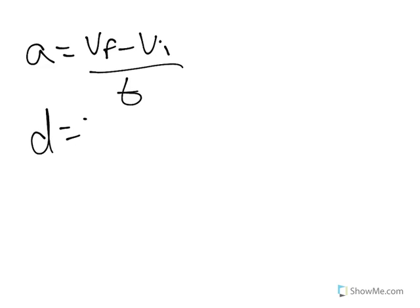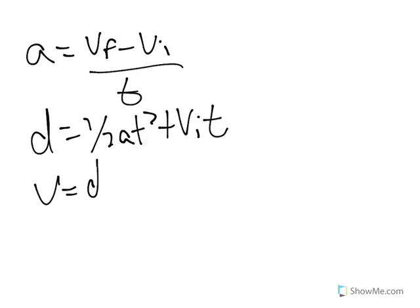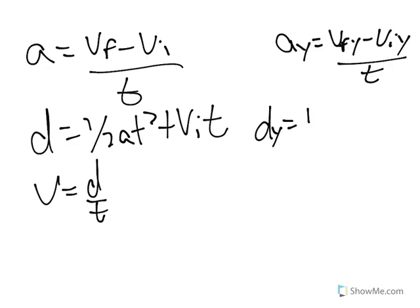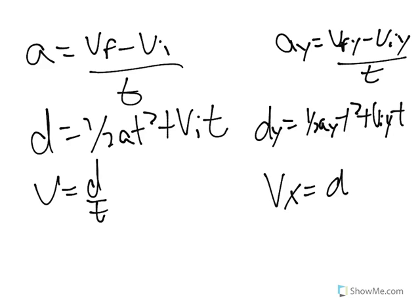The first thing is that we took these formulas from acceleration and manipulated them for our purposes. We had A = VF - VI divided by T, D = 1/2 AT² + VIT, and V = D/T. Now we rearranged these so that they worked for us for this particular case. So we had AY = VFY - VIY divided by T, DY = 1/2 AYT² + VIYT, and VX = DX/T.